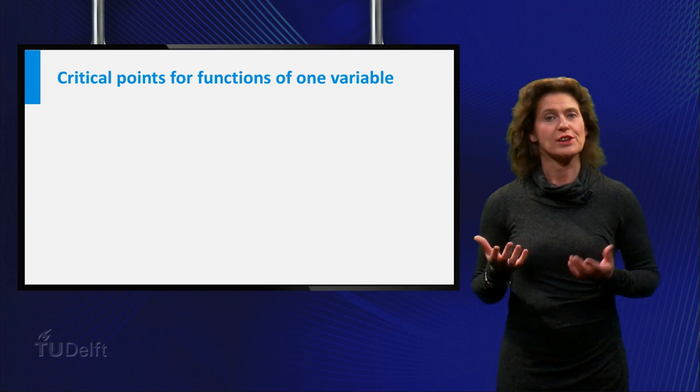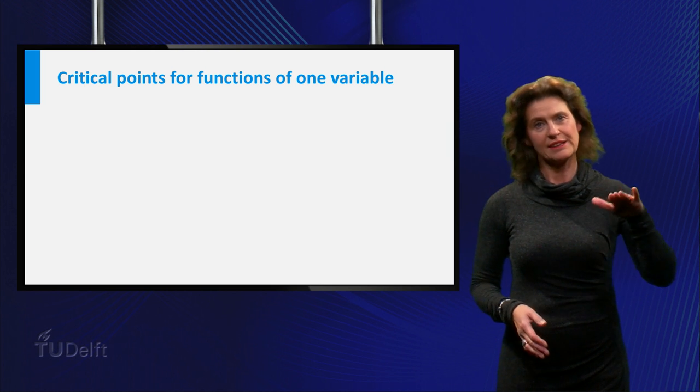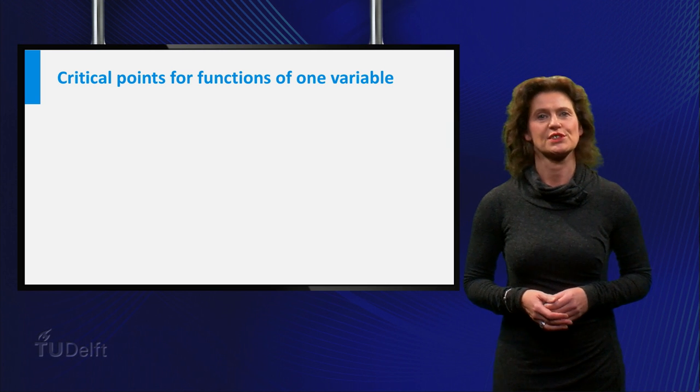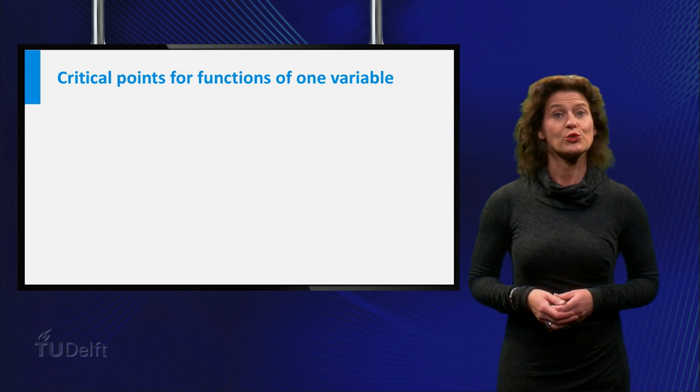For functions of one variable you are able to determine special points like maxima, minima and inflection points. If the first derivative of the function in such a point is equal to zero, these points are called critical points.